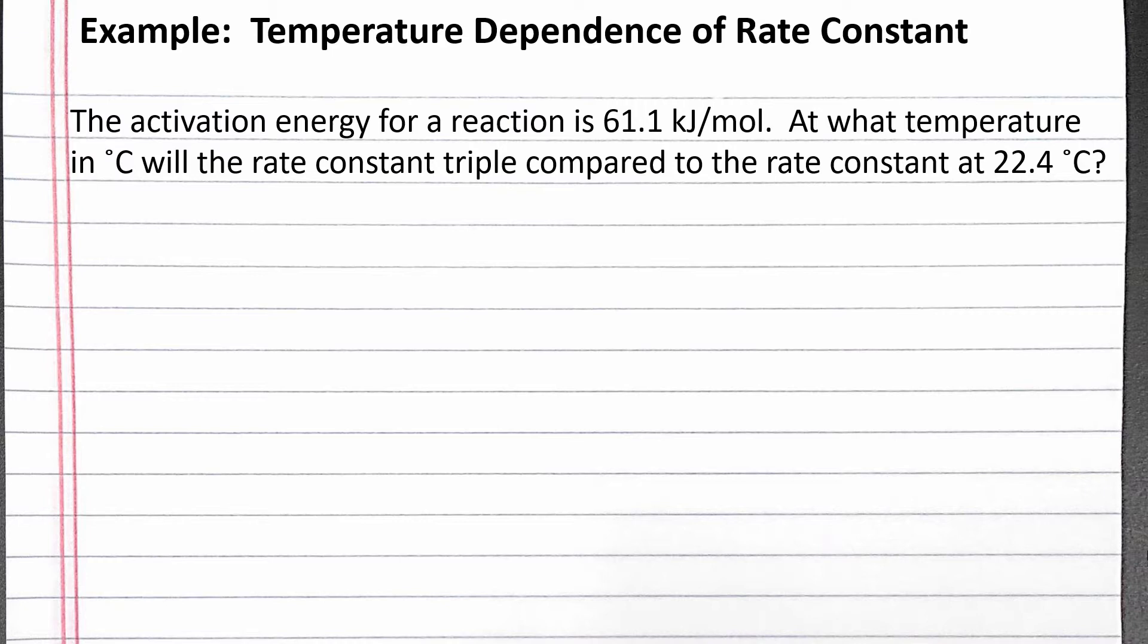At what temperature in degrees Celsius will the rate constant triple compared to the rate constant at 22.4 degrees Celsius? We can start with a two-point form of the equation relating the rate constant to activation energy and temperature. Our activation energy is 61.1 kilojoules per mole, which we will need to convert to units of joules per mole.